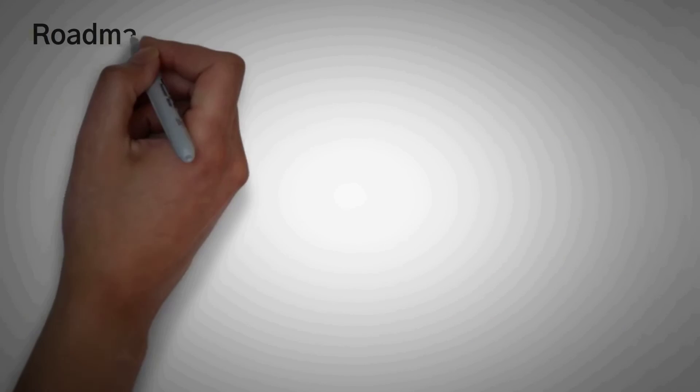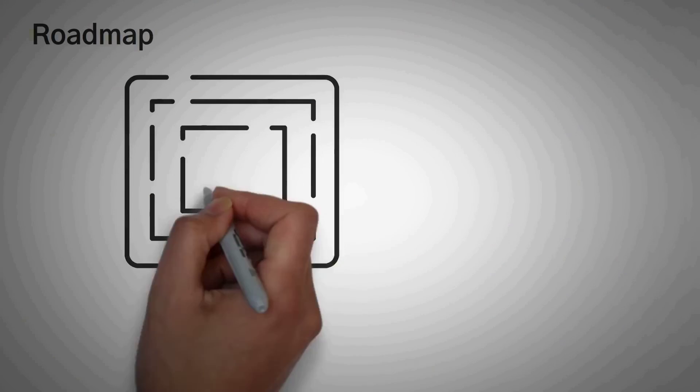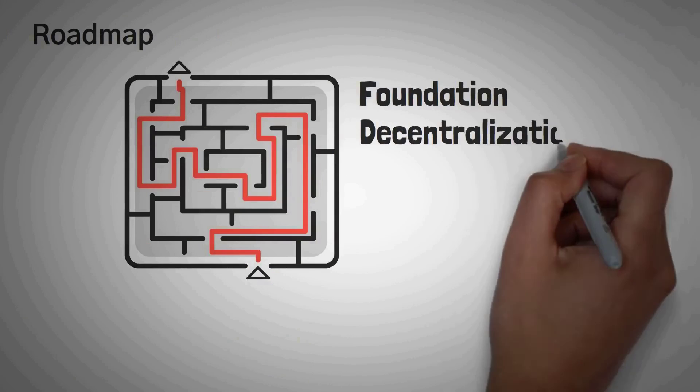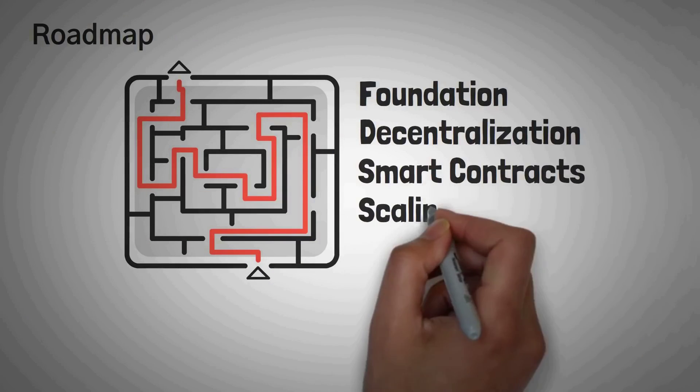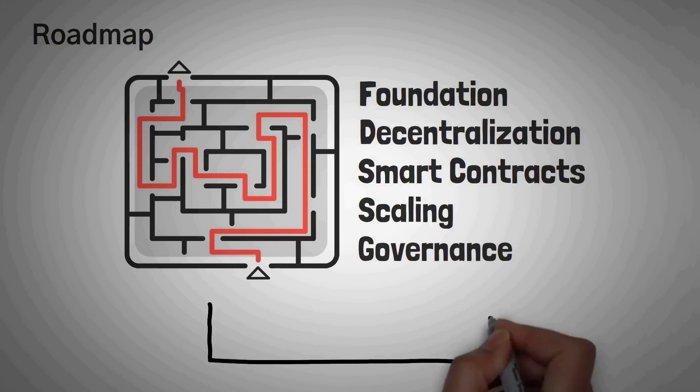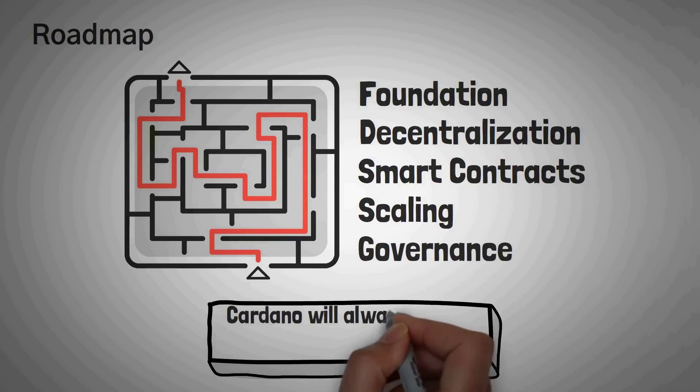As a methodical and precise organization, IOHK has released a roadmap for Cardano's future, which includes five eras. Foundation, Decentralization, Smart Contracts, Scaling, and then Governance, which you can actually read the roadmap if you'd like. Each of these eras takes on a new challenge, and it adds new products and features to Cardano's capabilities. It's safe to say that regardless of any future utility, Cardano will always have a plan for what they do next.